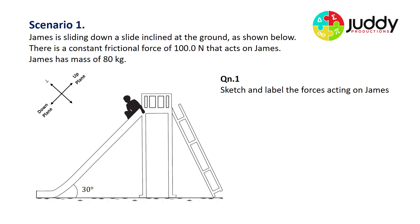Task number one: sketch and label the forces acting on James. Most of us are aware that earth is pulling on James, generating a gravitational force Fg. We also know the slide itself pushes back against James perpendicular to the surface, which is our normal reaction force. Finally, there's a frictional force of 100 newtons acting on James. Friction always opposes the direction of motion, so that goes back up the plane. So there's our three forces: force due to gravity, normal reaction force, and frictional force.